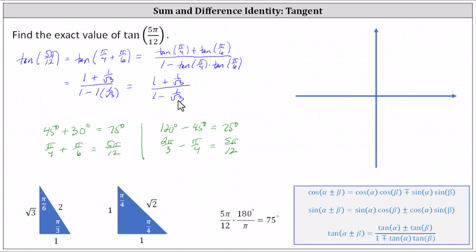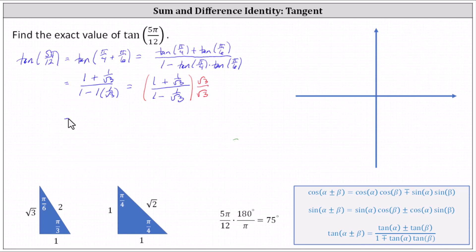We clear the square root three from the denominators by multiplying the numerator and denominator of the complex fraction by square root three. In the numerator, we have square root three times one, which is square root three, plus square root three times one divided by square root three, which equals one. In the denominator, square root three times one is square root three, minus square root three times one divided by square root three, which is one.